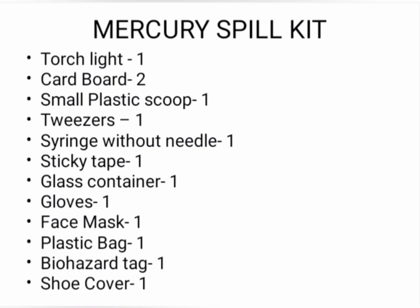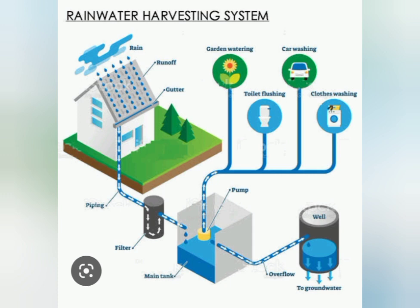You need to have the following items in the mercury spill kit: one torch light, two cardboard pieces, one small plastic scoop, one tweezer, one syringe without needle, one sticky tape, one glass container, one pair of gloves, one face mask, one plastic bag, one biohazard tag, and one shoe cover.